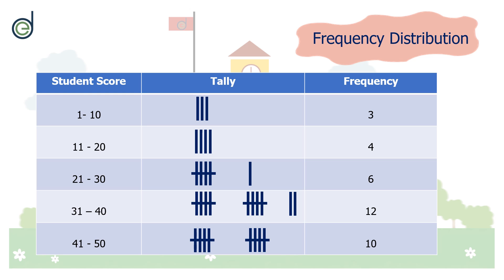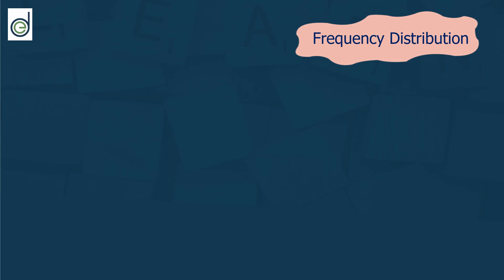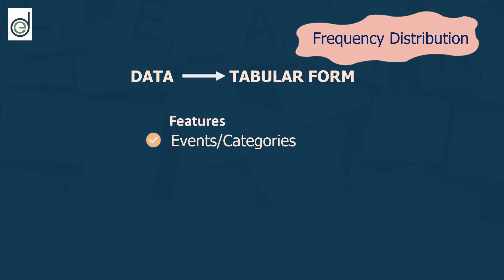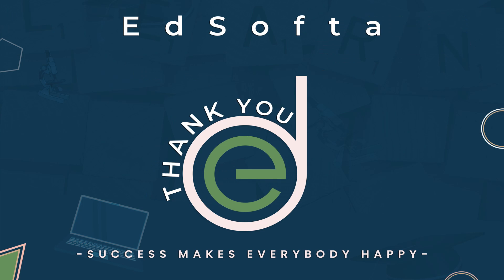So we have come to the end of frequency distribution. In this video you learned how to collect data and represent it in a tabular form — that is, in frequency tables. You also learned that a frequency table has a column for events or categories, tallies, and frequency. Lastly, you learned how to group data into class intervals. We hope to see you in our next video. Thank you for watching!